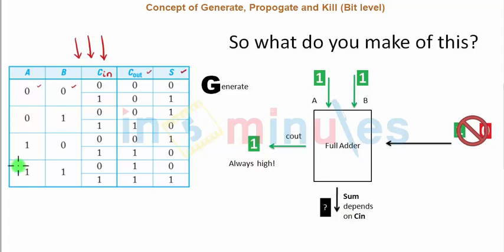If you see properly, you will come to know that the last two cases where your A is 1 and your B is 1, your C out is 1 irrespective of your C in. Your C in can be a 0 or can be a 1, it does not matter. Your C out is going to be equal to 1. So my carry is generated when my A is 1 and my B is 1 irrespective of my C in. Cool.